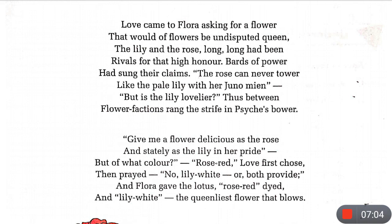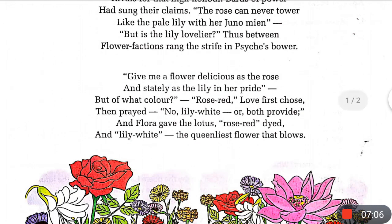'Give me a flower delicious as the rose' — Cupid says to Flora: give me a flower that is as delicious and sweet as the rose, and as stately as the lily in her pride, meaning as tall and royal and proud as the lily.